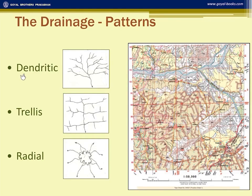In the dendritic pattern, the river and its tributaries make a pattern like the veins of a leaf, or we can say a branch of a tree. You can see the example in grid square 3894. In the trellis pattern, the tributaries join the main river at a right angle or almost at a right angle, as you can see in grid square 4093.